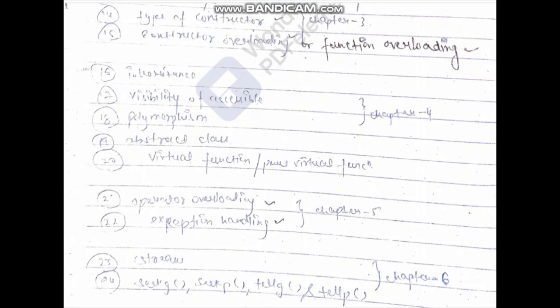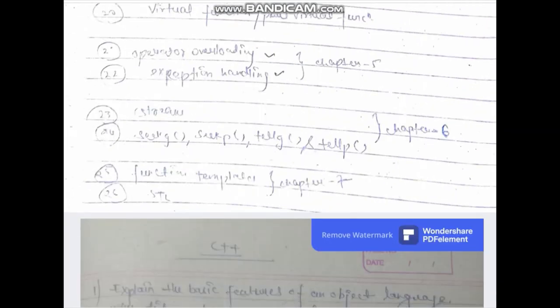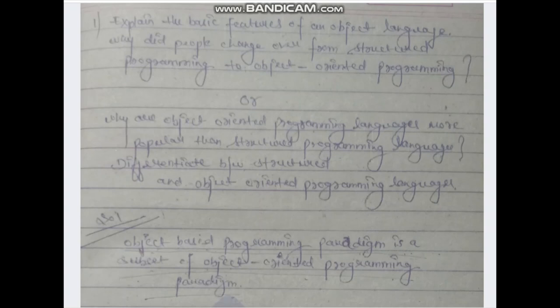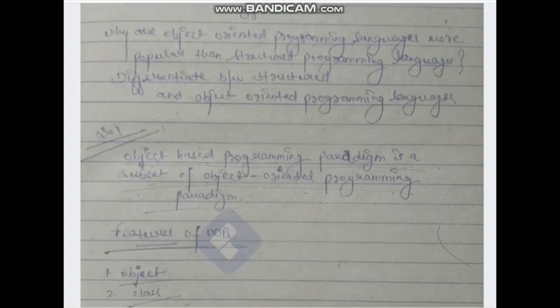All these topics are easily available in your book, so don't panic. One important question to note: explain the basic features of object-oriented language. Why did people change over from structured programming to object-oriented programming? Why are object-oriented programming languages more popular than structured programming languages? These are core questions.